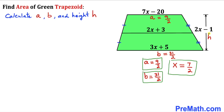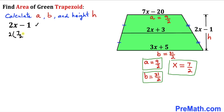Finally, let's calculate the height h, represented by 2x minus 1. Substituting x equals 7/2 gives 2 times (7/2) minus 1. The 2s cancel, leaving 7 minus 1, which equals 6. So the height h is 6 units.